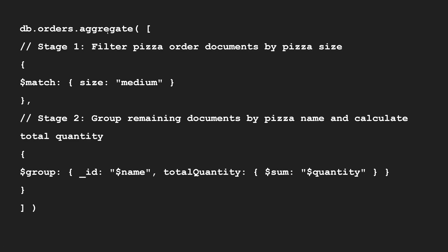A sample aggregate query looks like this: db.orders.aggregate(). Just as we use find, updateMany, or insertOne, we use aggregate here. The first stage uses dollar match, which is a filter similar to the where condition in the find method. Dollar match with size: medium filters the orders collection to pizza orders where the size is medium. Only medium pizzas are sent to the next stage. In stage two, documents are grouped by pizza name, and we calculate the total quantity using dollar sum on the quantity field.